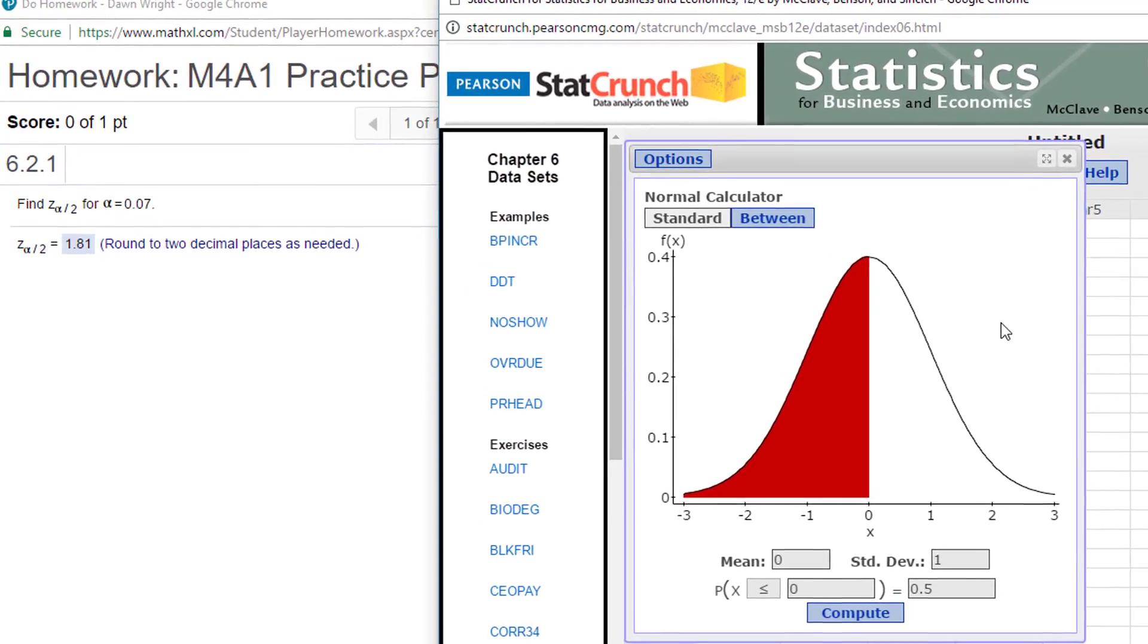And I've got my normal calculator open here, and it asks for Z of alpha over 2. Because it's asking for Z and not minus Z, all we need to do is take alpha, which is 0.07, divide that by 2, which is 0.035.